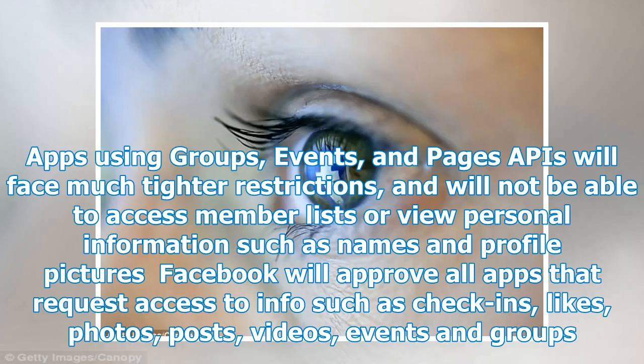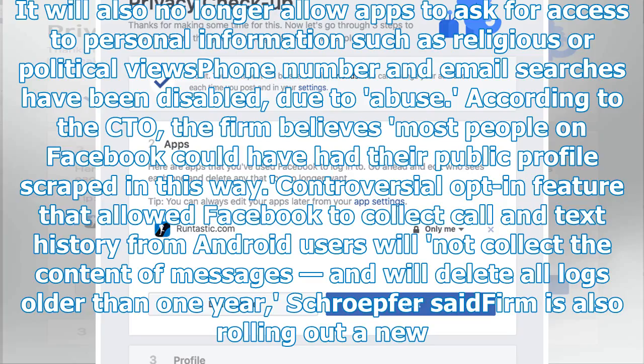Facebook will approve all apps that request access to information such as check-ins, likes, photos, posts, videos, events, and groups. It will also no longer allow apps to ask for access to personal information such as religious or political views. Phone number and email searches have been disabled due to abuse, according to the CTO.